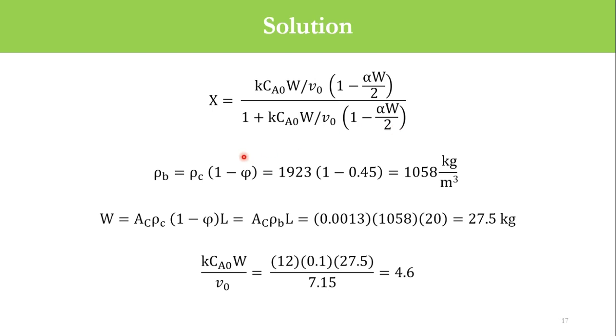We know that bulk density equals catalyst density times (1 minus void fraction). The void fraction is 0.45, density is 1923, so accordingly the bulk density is 1058 kg per cubic meter.